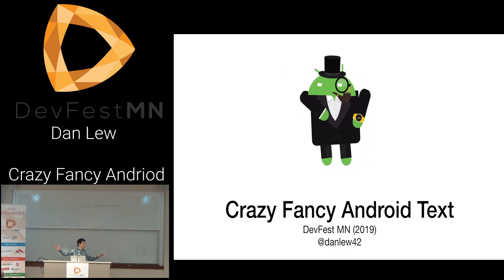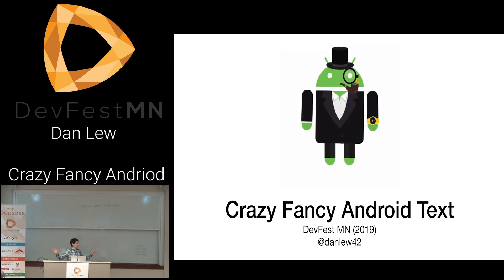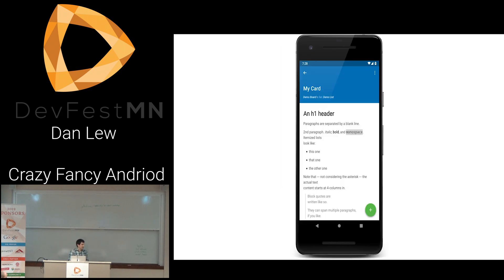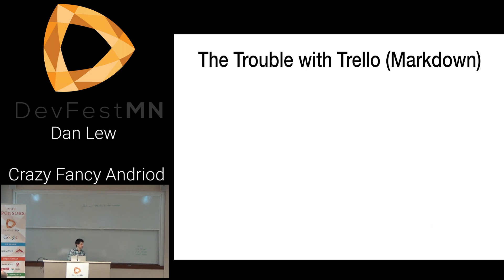Hello, everyone. I'm Dan Liu. I work on Trello Android, and I'm here to talk about crazy fancy Android text. I work on Trello. As you may or may not know, in Trello you can actually use Markdown to make cool fancy text in the app. We've had Markdown in the app for quite a while, but there was a lot of trouble with our old Markdown parser. This is the story behind why this talk exists.